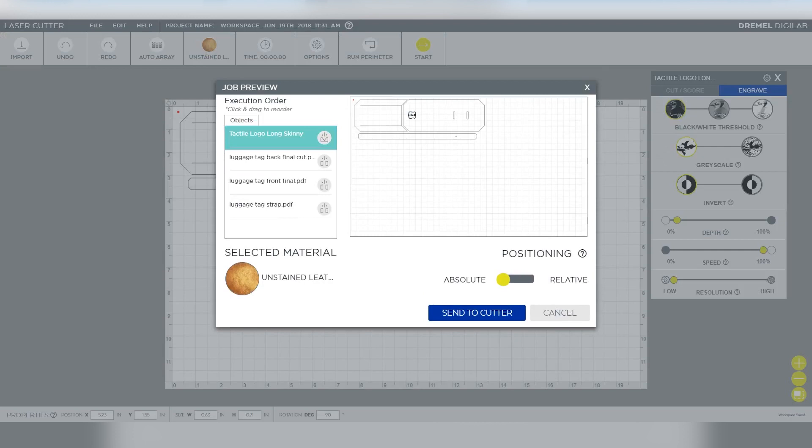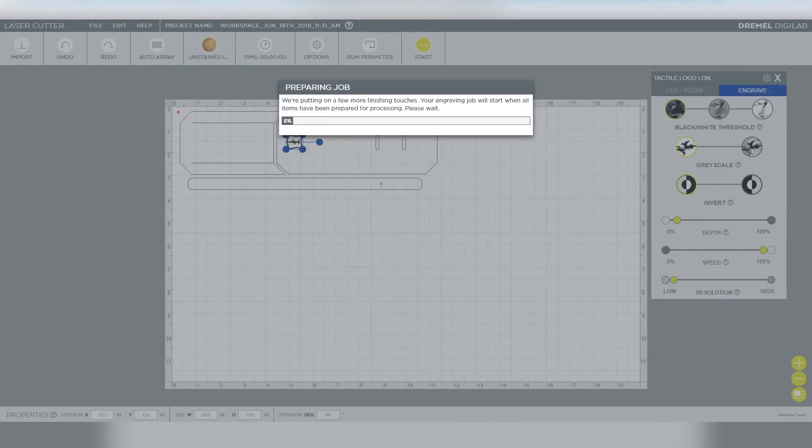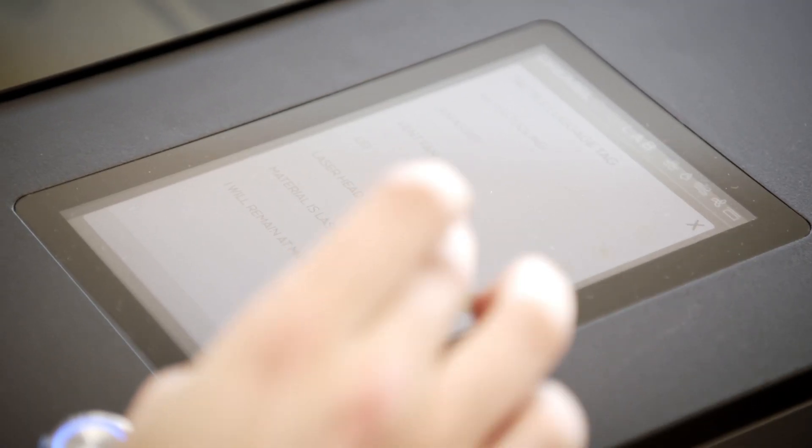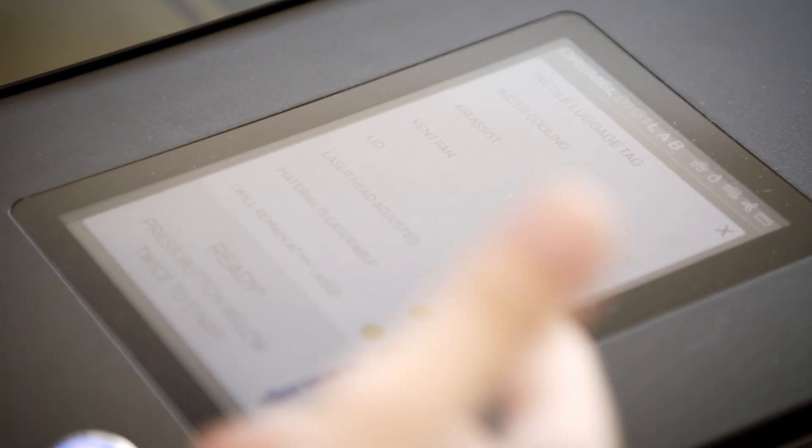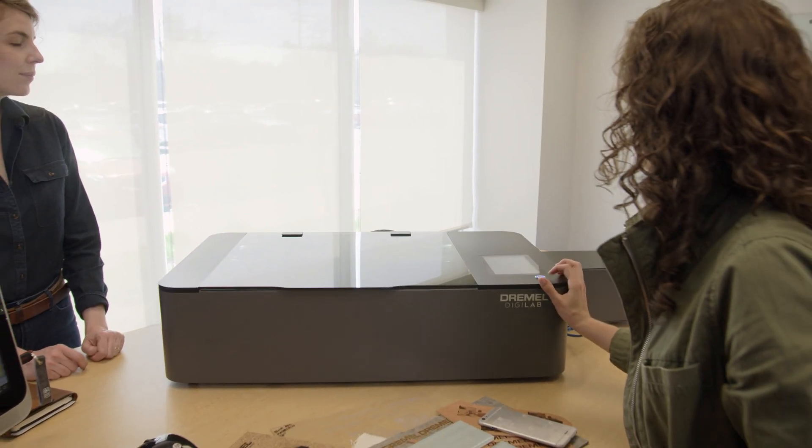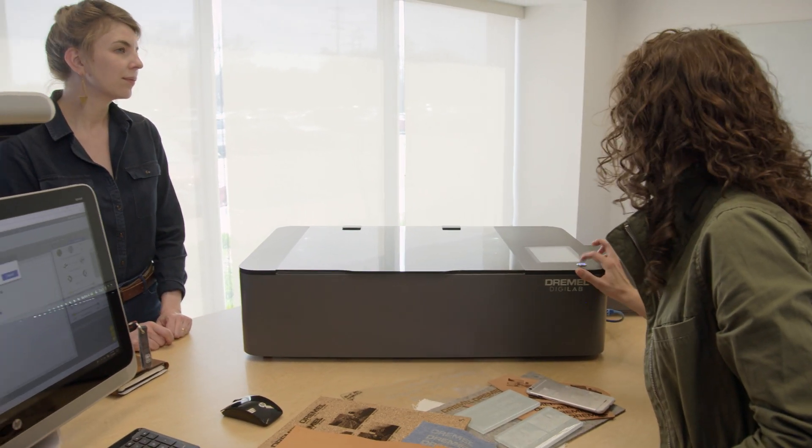All we need to do now is just go ahead and send the job to the laser. It's generally a best practice to put the engraving first in case the cut piece falls through and then it's slightly out of focus. Send that over. Now it's going through the checklist. You need to accept a couple different reminders and warnings and then double click to start.